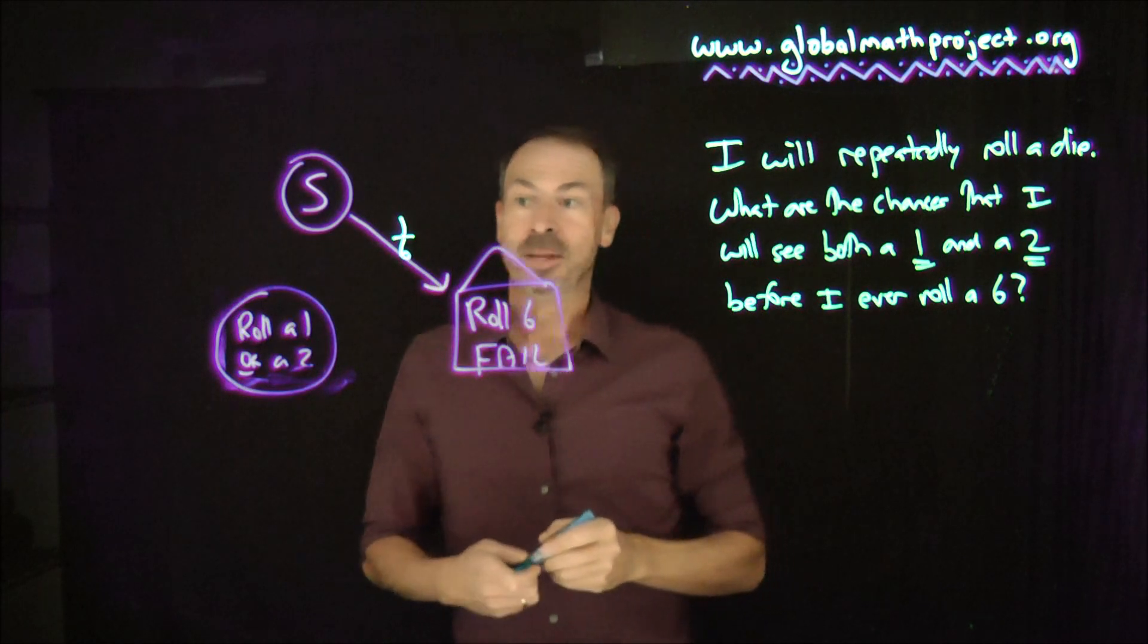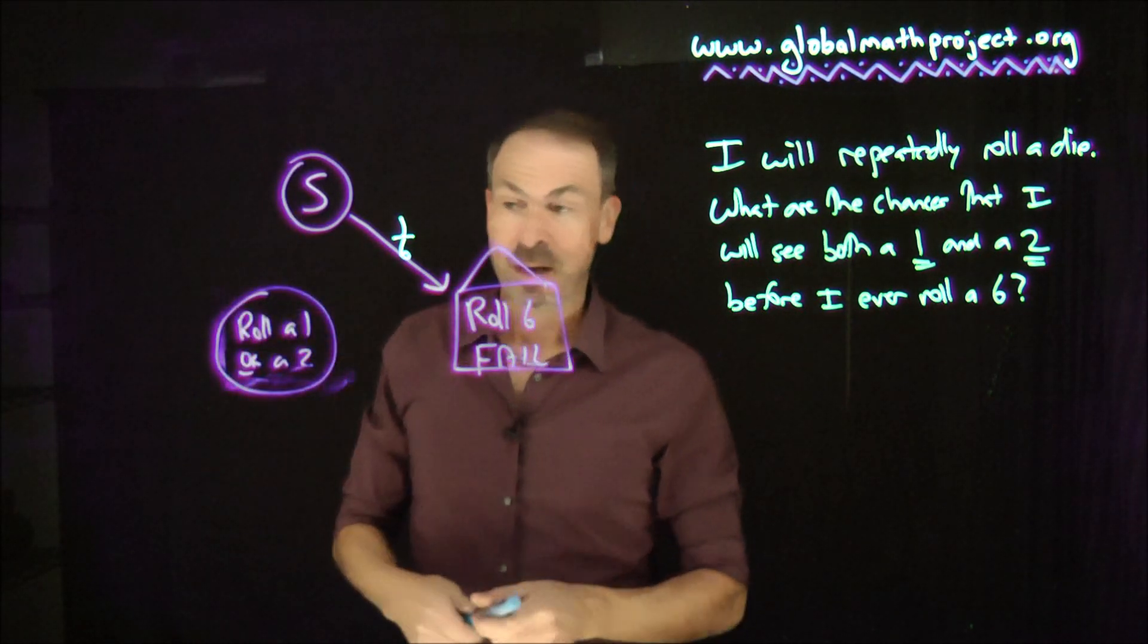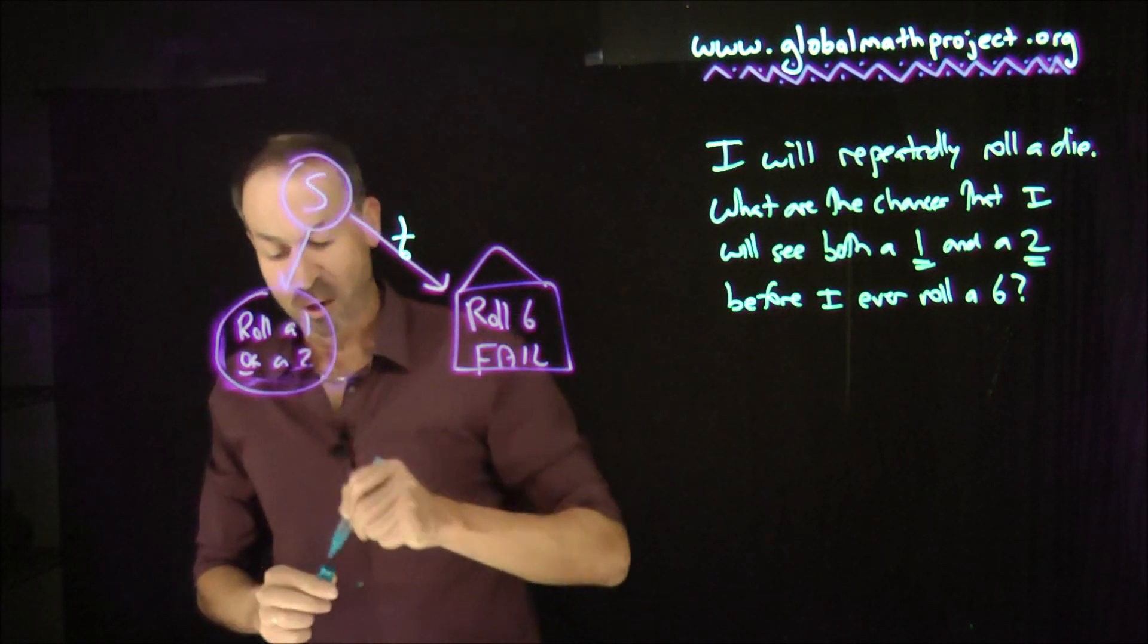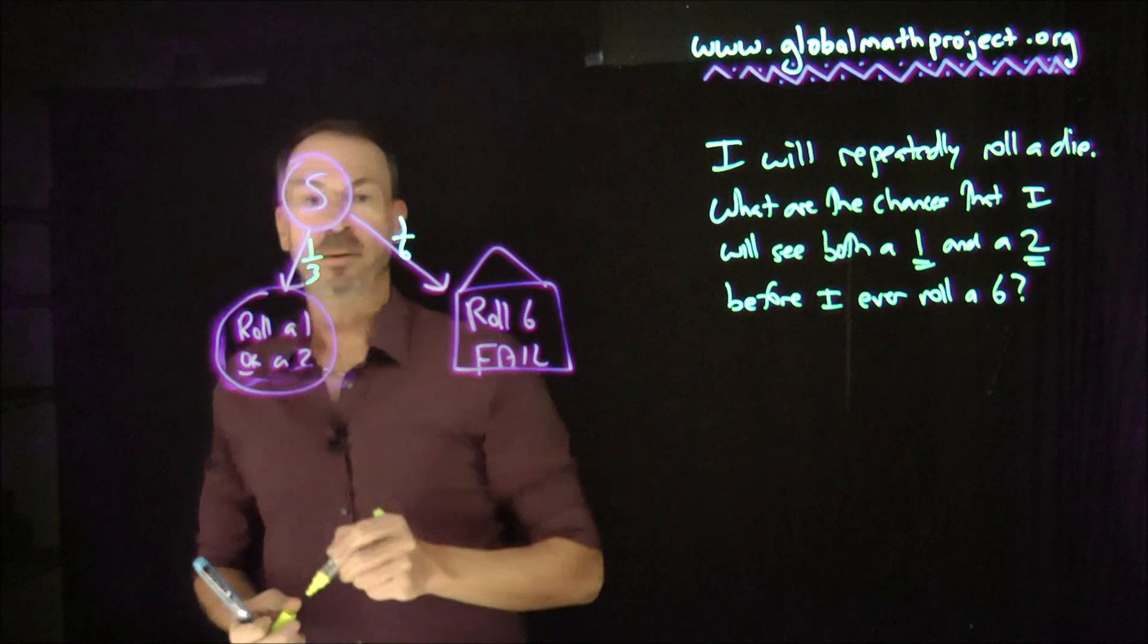They haven't completed the task yet, but I know one-sixth of the people will roll a 1, one-sixth of the people will roll a 2, so that means two-sixths, one-third of the people will get either a 1 or a 2. So that's a one-third.